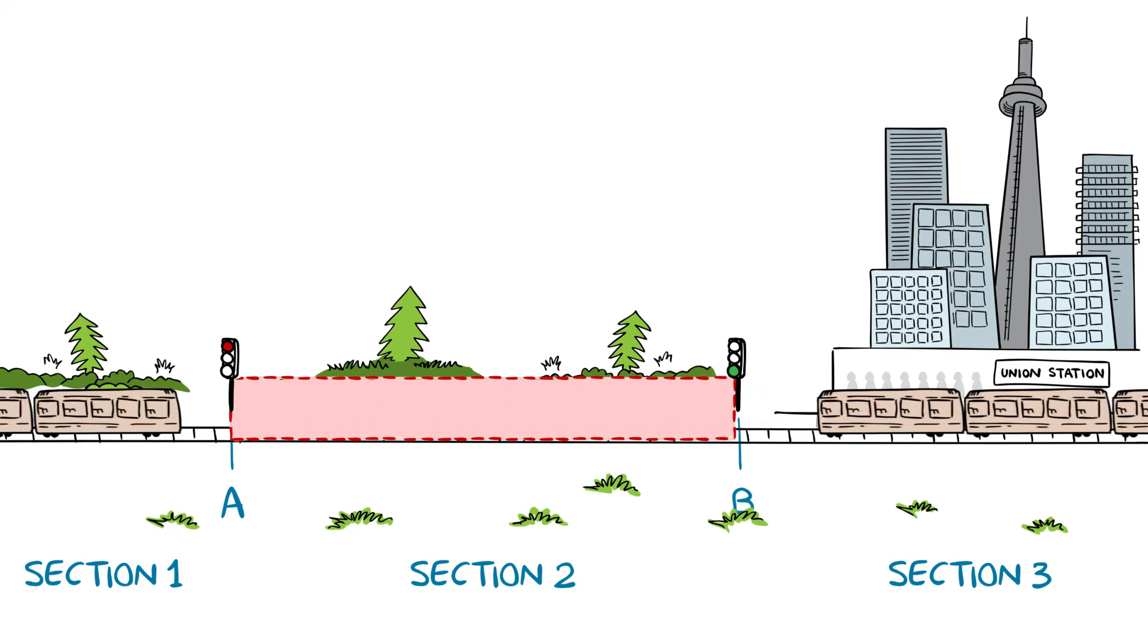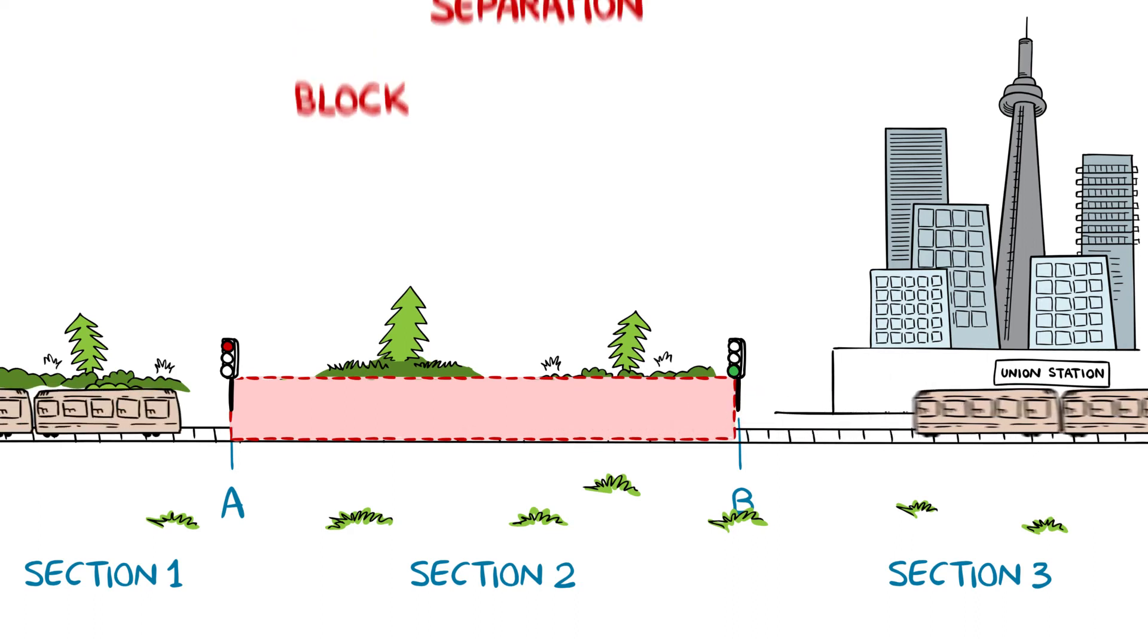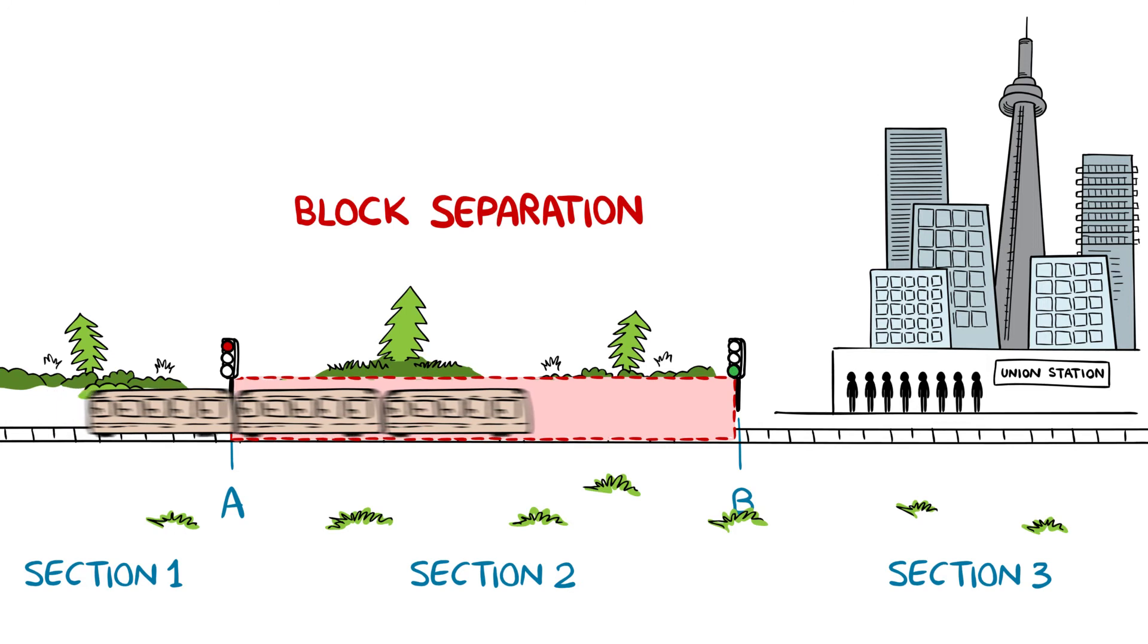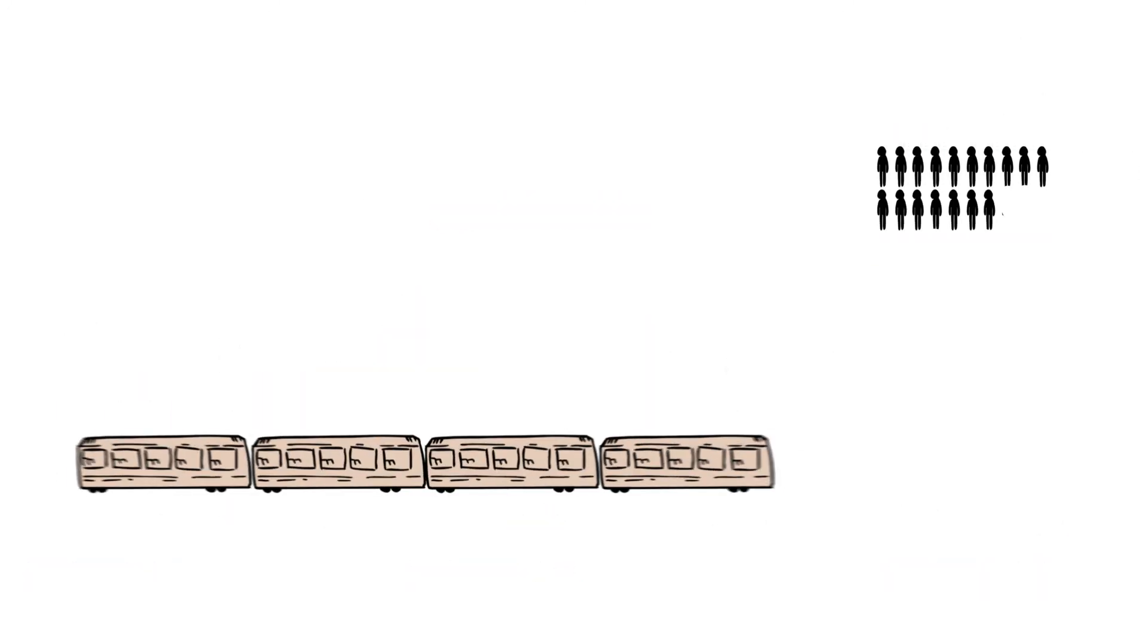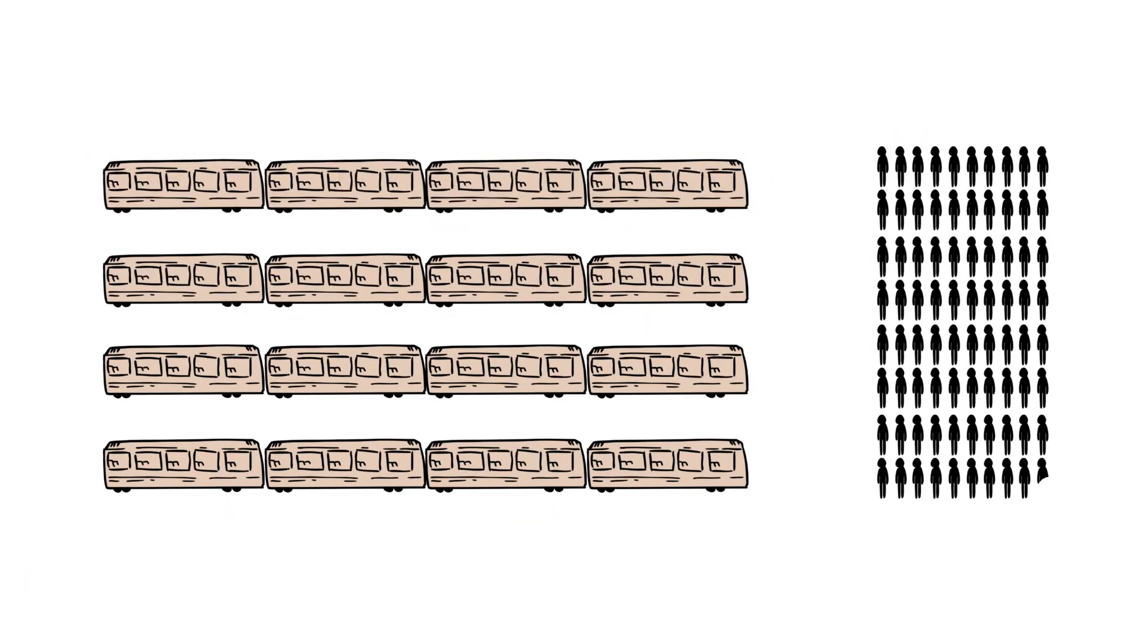A conventionally signalled system must maintain a minimum of one block separation between trains and that is the limiting factor. To increase subway capacity, a new signalling approach is required.